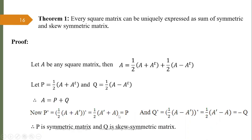Now we prove the uniqueness of P and Q. For that we introduce two dummy matrices R and S such that R is a symmetric matrix, S is a skew-symmetric matrix, and A = R + S.